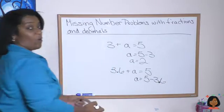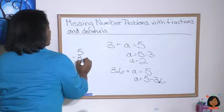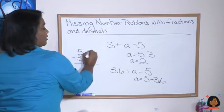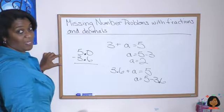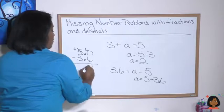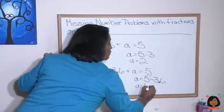So A is going to equal 5 minus 3.6. And we're going to go over to the side and do our math. 5 minus 3.6. And we're going to add that 0 there as a placeholder so we can regroup. This goes to 4, and we have a 4 here and a 1 here. A equals 1.4.